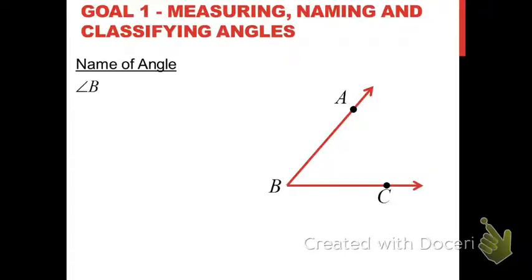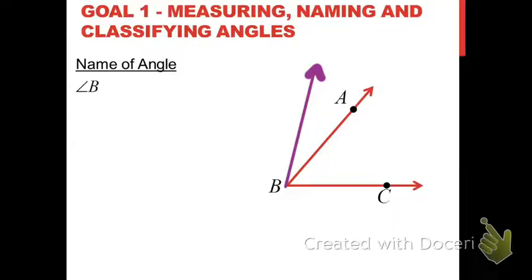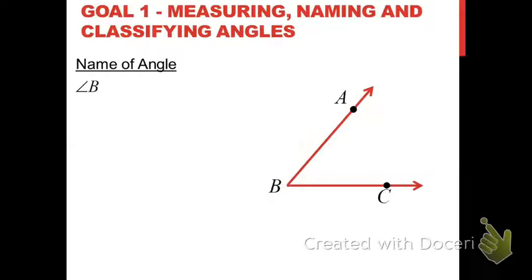Another way of naming an angle, which is necessary many times, is to name it using three points rather than just the vertex. When would you need to use three points? Well, let's suppose I had more than one angle that had vertex B. If I refer to angle B, it's not very specific — there could be multiple angles all sharing vertex B. So just naming it angle B is not sufficient, at least not all the time.